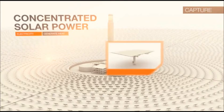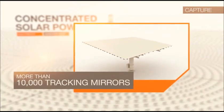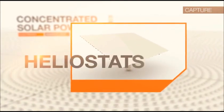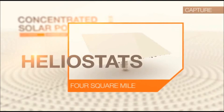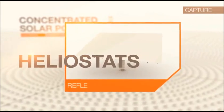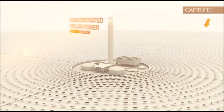More than 10,000 tracking mirrors, called heliostats, reside in a 4 square mile field where they reflect and concentrate sunlight onto a large heat exchanger called a receiver.